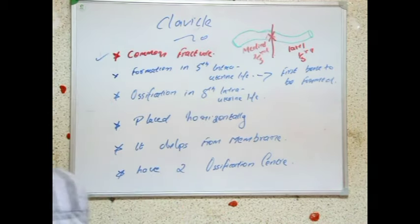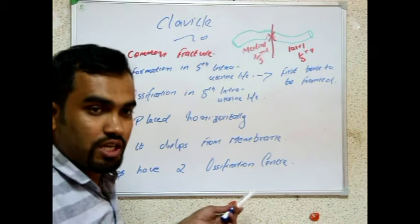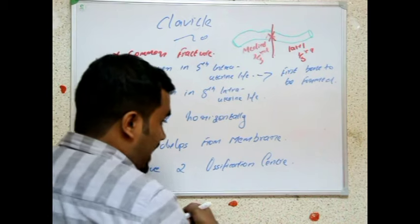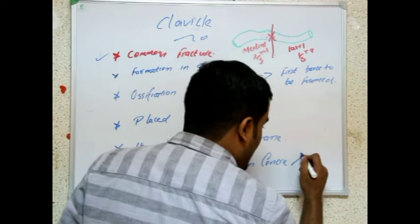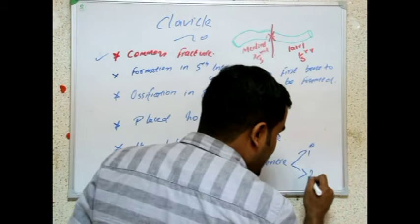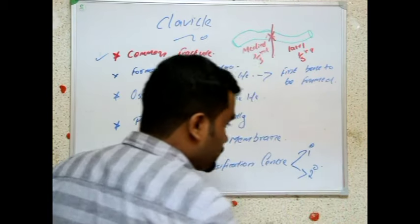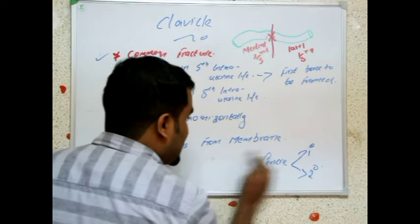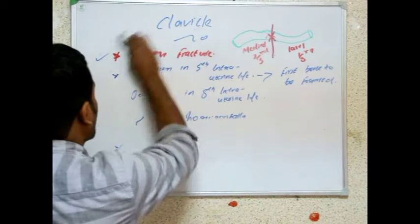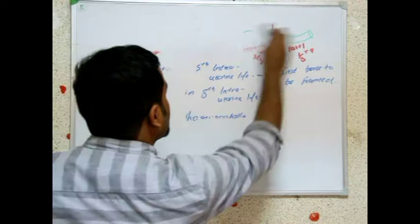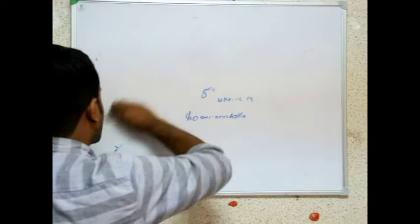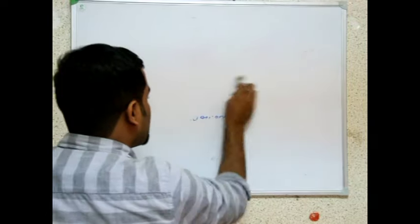Then the difference between — as I told you, clavicle has two ossification centers. So there is a difference between primary and secondary ossification centers. We'll discuss the difference between primary and secondary ossification centers.